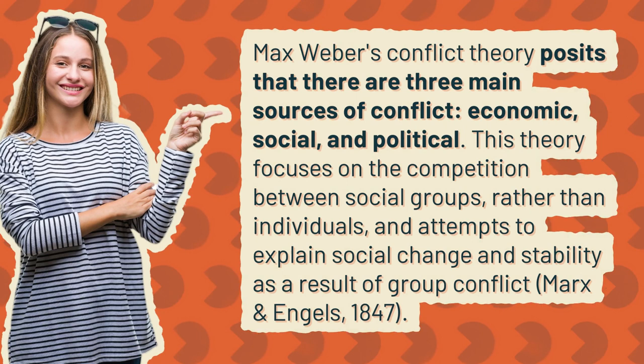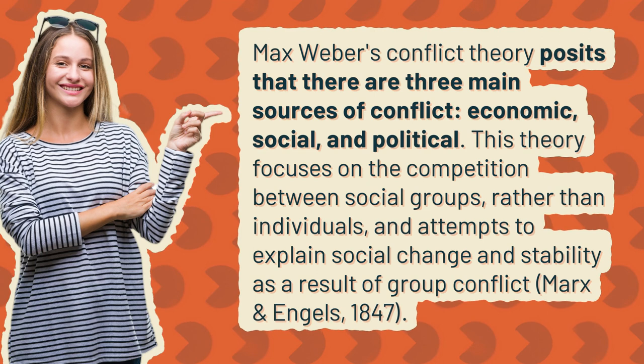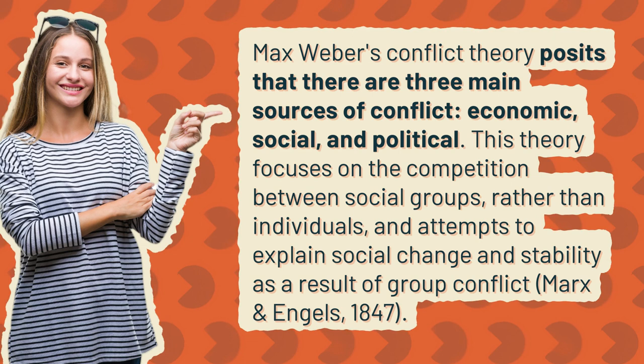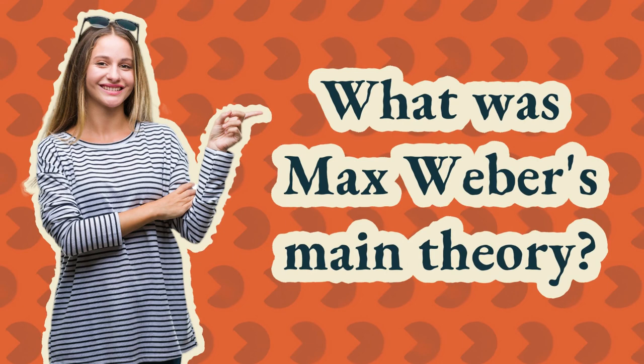What is Max Weber's Conflict Theory? Max Weber's Conflict Theory posits that there are three main sources of conflict: economic, social, and political. This theory focuses on the competition between social groups rather than individuals, and attempts to explain social change and stability as a result of group conflict. (Marx and Engels, 1847.)